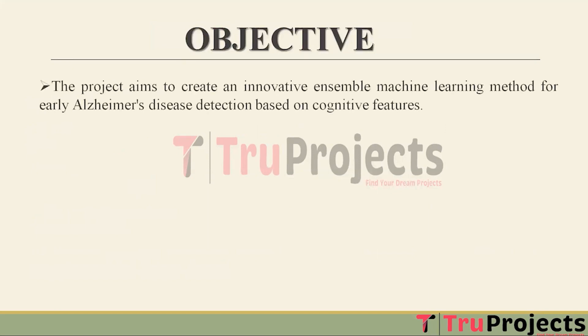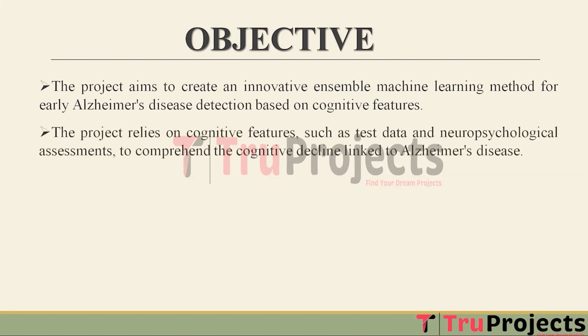The project's primary objective is to develop a groundbreaking ensemble machine learning approach for early detection of Alzheimer's disease. This approach combines multiple machine learning models to improve the accuracy and reliability of AD diagnosis. Cognitive features such as data from cognitive tests and neuropsychological assessments serve as the basis for understanding cognitive decline associated with Alzheimer's disease.